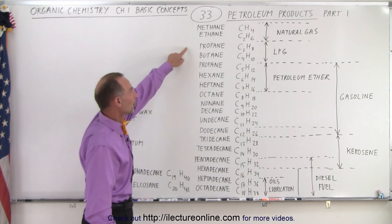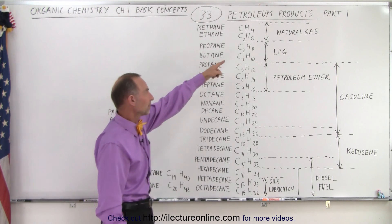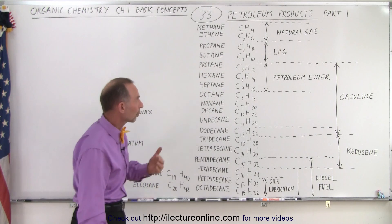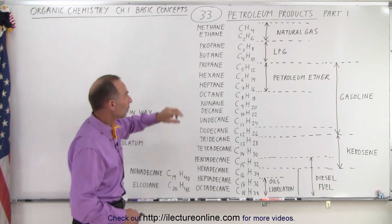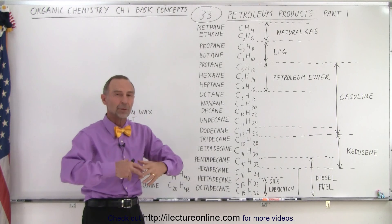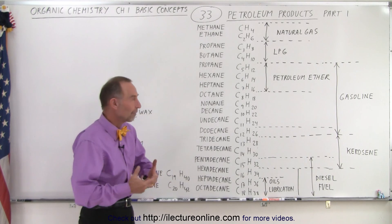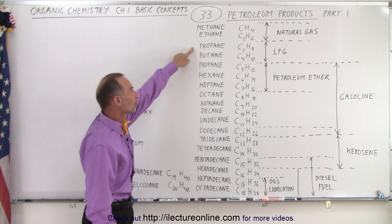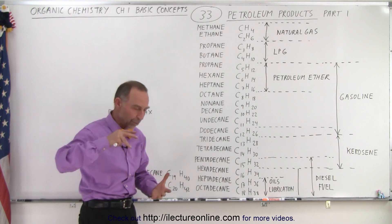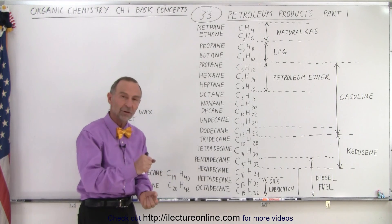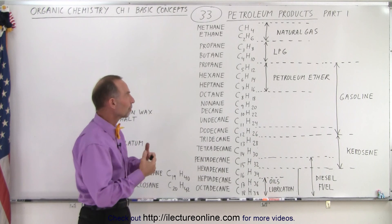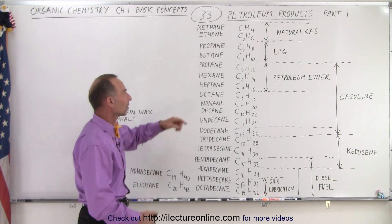Then if it's propane and butane — those have three or four carbons — we end up with something that under pressure becomes a liquid, and when you let the pressure off it becomes a gas. Propane is used for a lot of cooking; they fill your propane tank, and when pressurized enough it's actually liquid, but once it comes out and is no longer under pressure, it comes out as a gas.